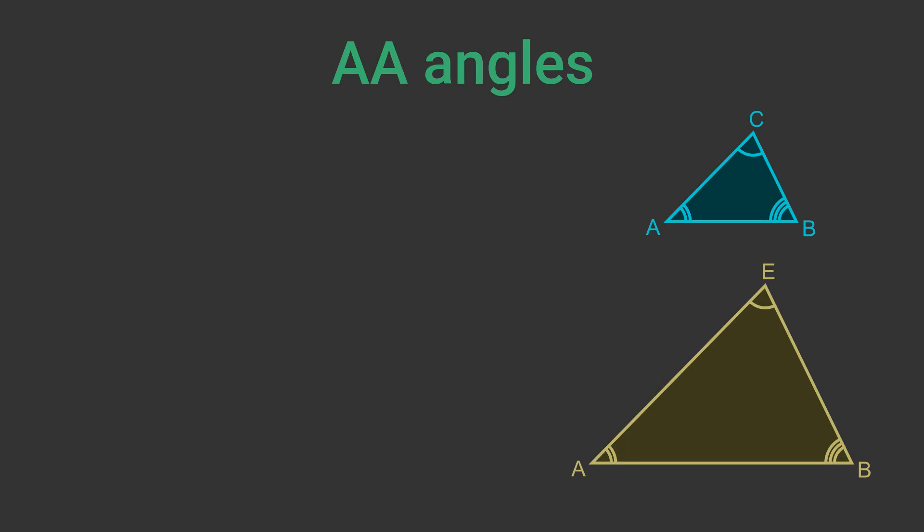We will look at the AA case first. These triangles have two angles the same. The two angles labelled A are equal. The two angles labelled B are equal. We will start by proving that the third angle is the same so C equals E. This is quite easy.